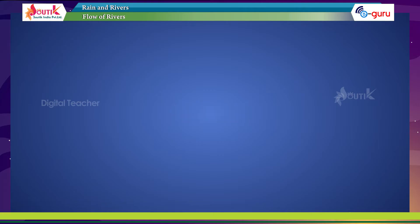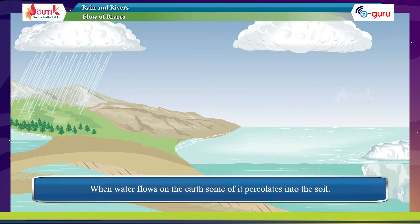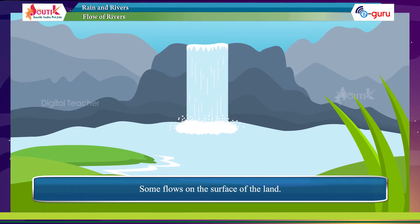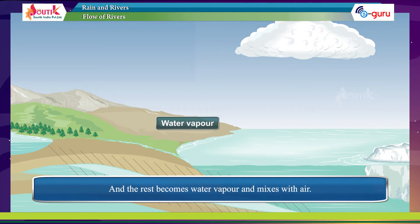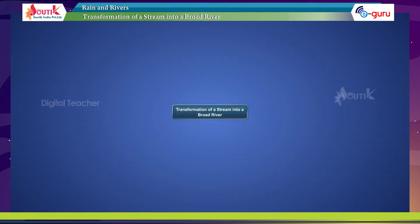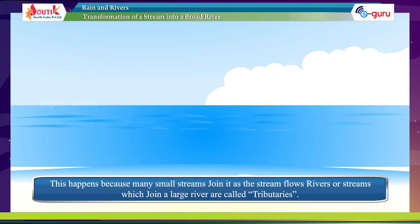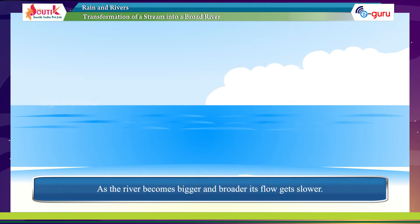Flow of rivers: when water flows on the earth, some of it percolates into the soil, some flows on the surface of the land, and the rest becomes water vapor and mixes with air. A river usually begins as a thin stream. As it flows further, it gets bigger and broader because many small streams join it. Rivers or streams which join a large river are called tributaries.